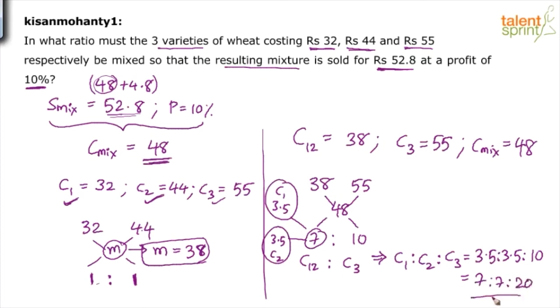So the ratio in which the three varieties are mixed will be 7 is to 7 is to 20. But we don't have to do all this if the ratios are directly given to us. If options are given, we can simply verify with this ratio. Let's do the option verification.